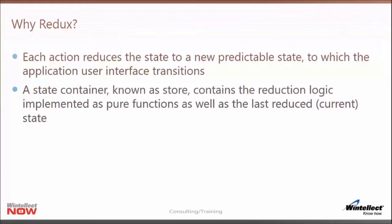If you take an action and apply it to the state over and over, that could come up with different states. But if you have the same state and the same action and put the two of them together, you always get the same predictable state. It's this new state that's produced which is used to transition the user interface — from whatever the previous UI looked like to the new view being displayed.